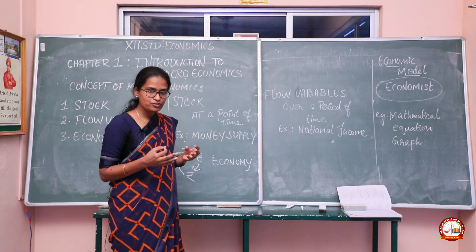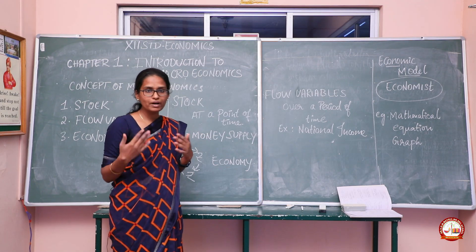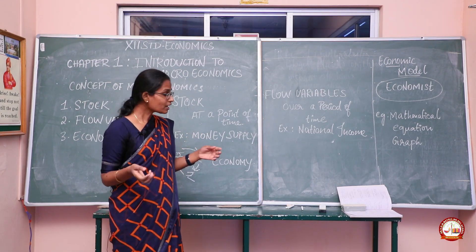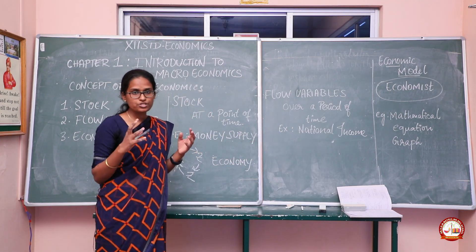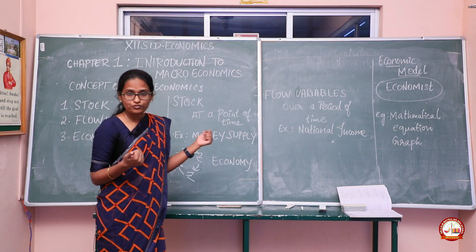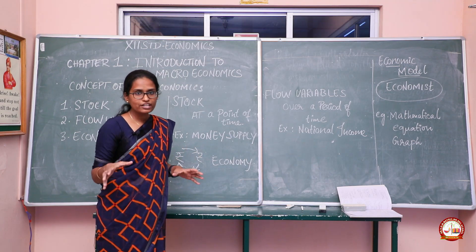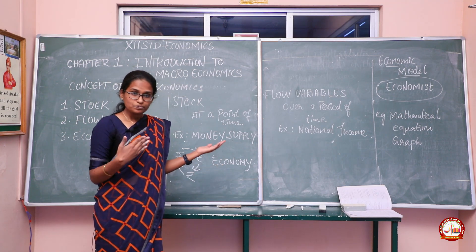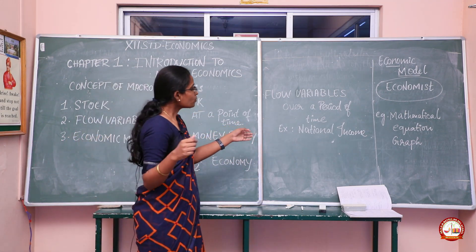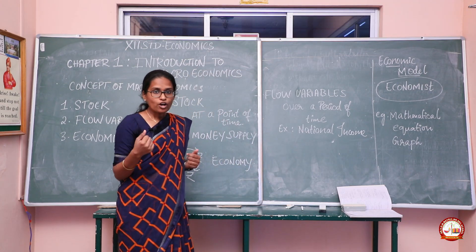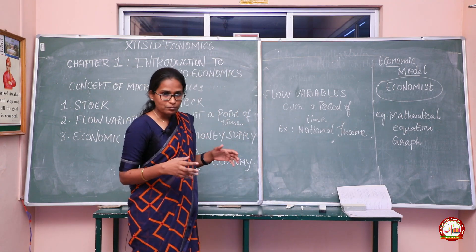Moving on to the next concept: flow variable. A flow variable is a quantity which is measured over a period of time — it just flows for a period of time, whether yearly, monthly, quarterly, or half-yearly. For example, national income — the earnings which are earned by the country or the economy. It's one example for flow variable. It flows throughout the year, so you cannot say this is the national income at a particular point of time.